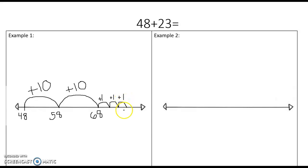So this is an open number line because we're only writing the numbers that we need. We're not putting every single number in between. We're not counting by fives. We're not counting by tens on the number line. We're only using the numbers that we need.